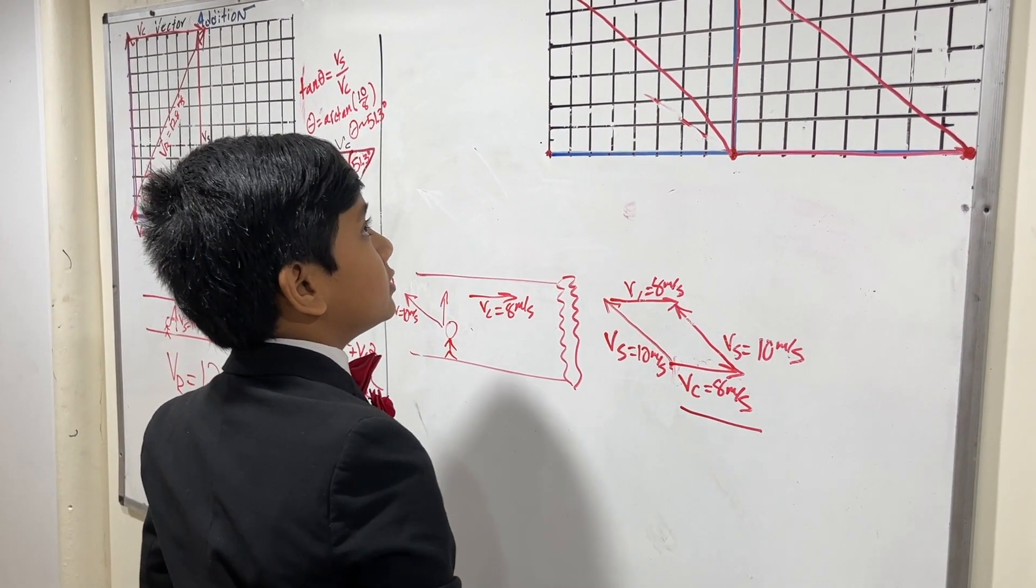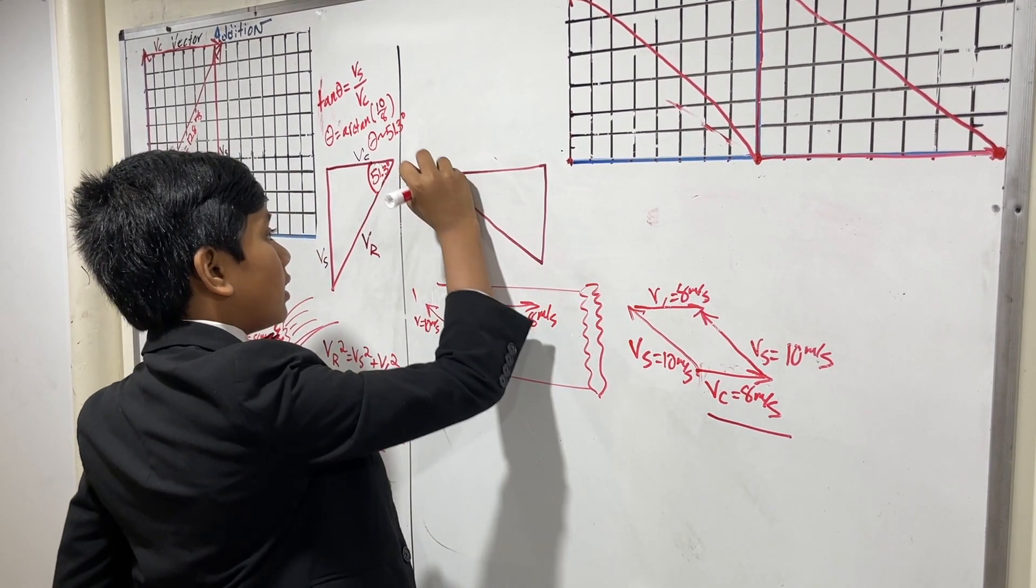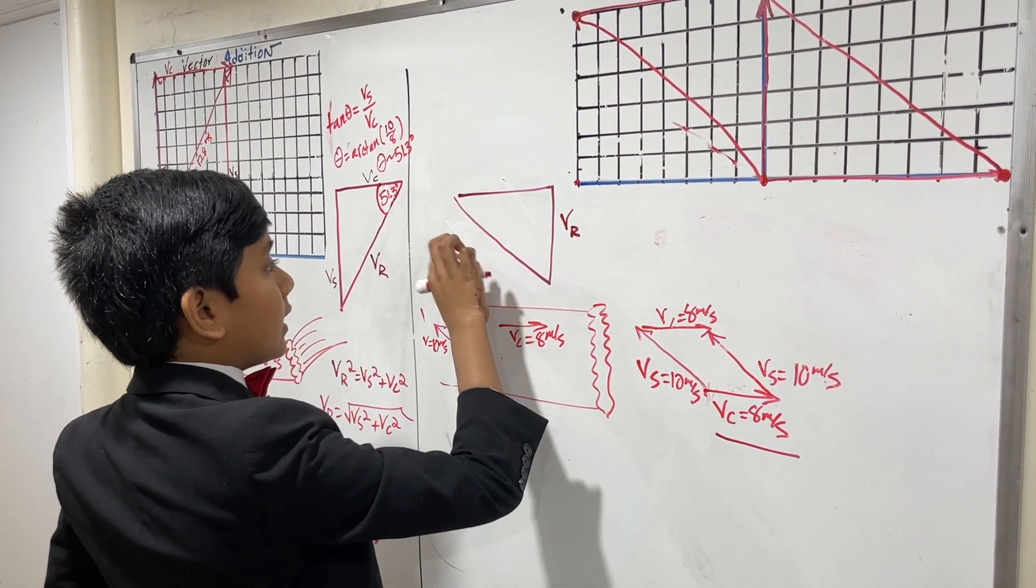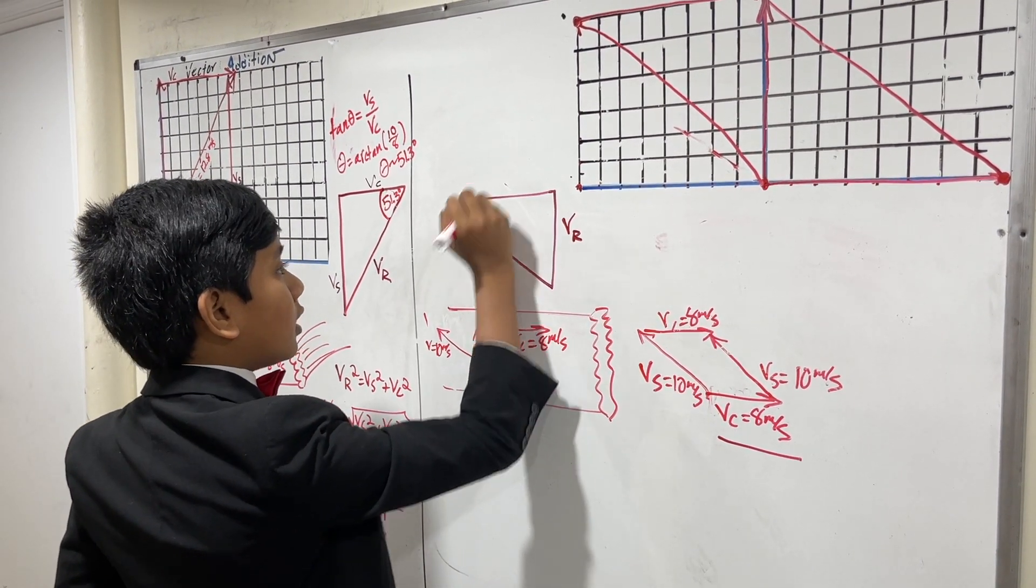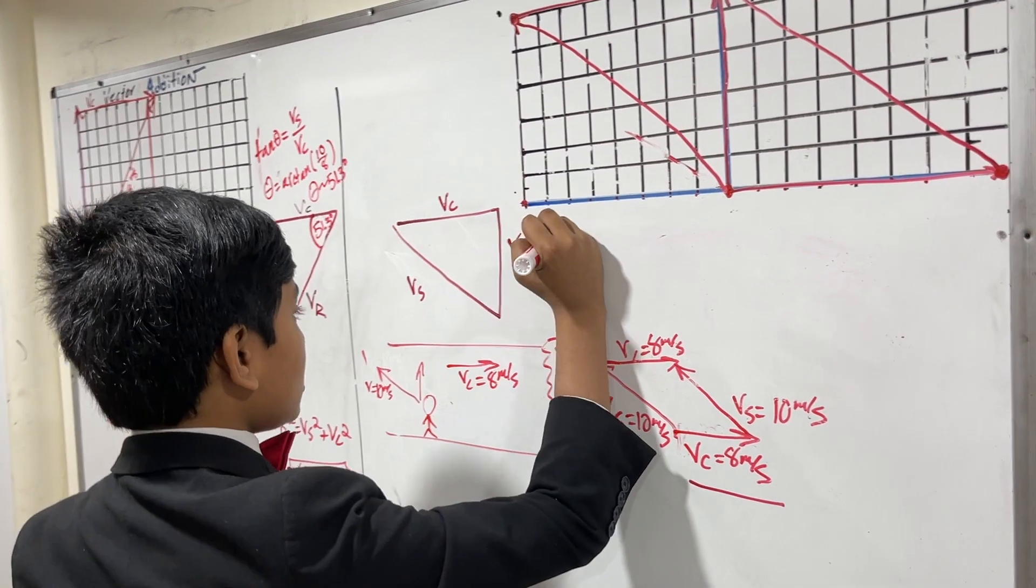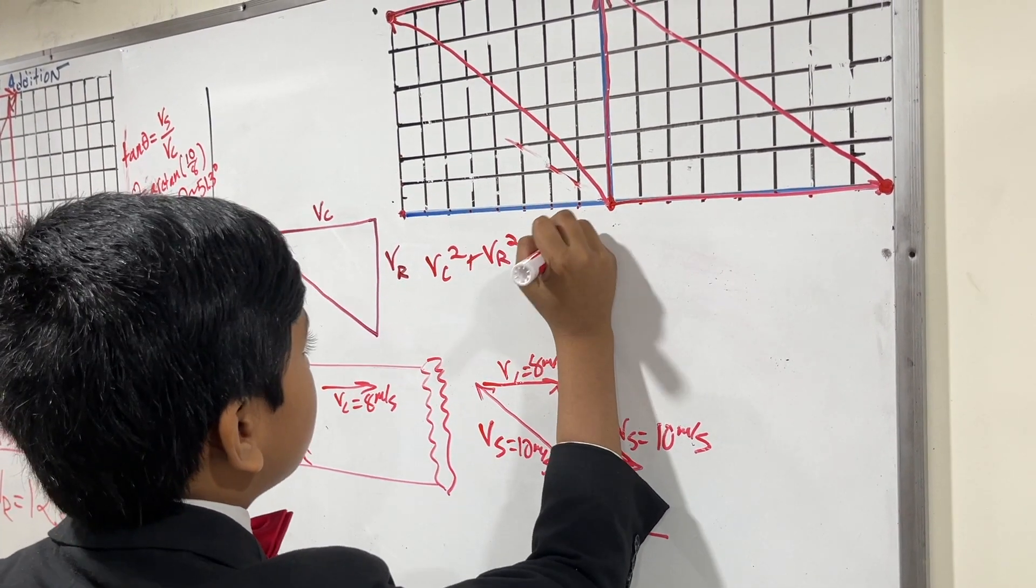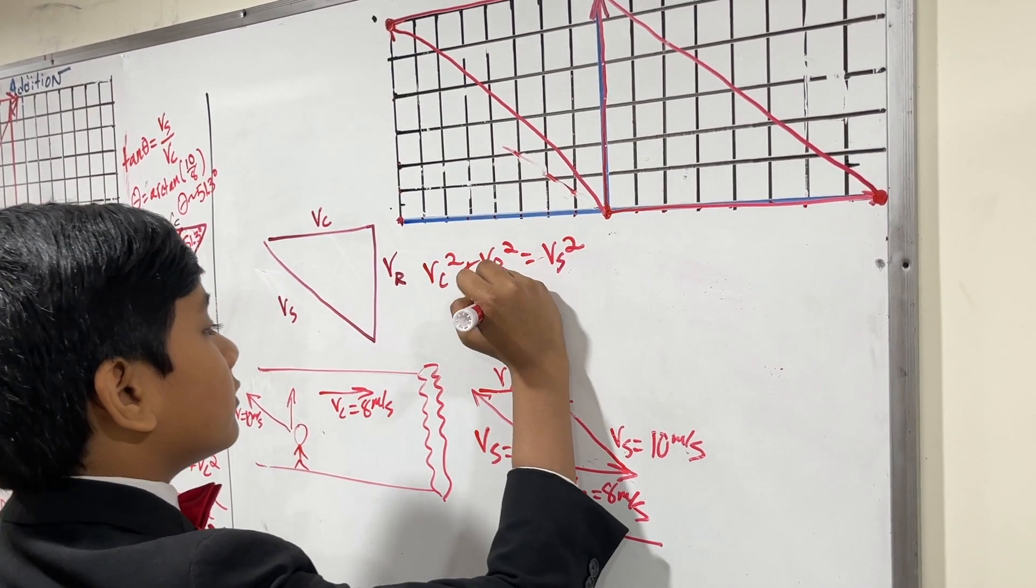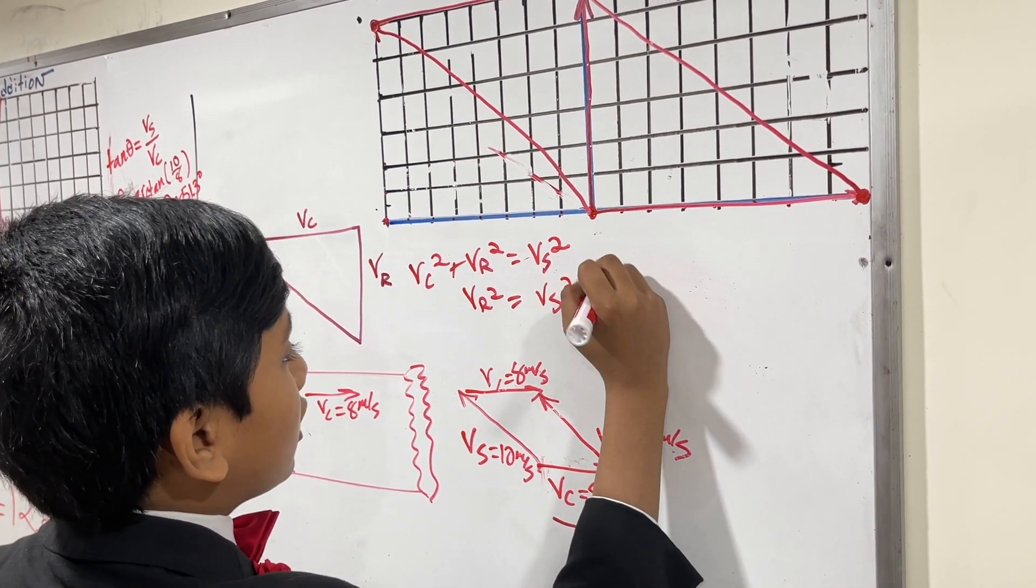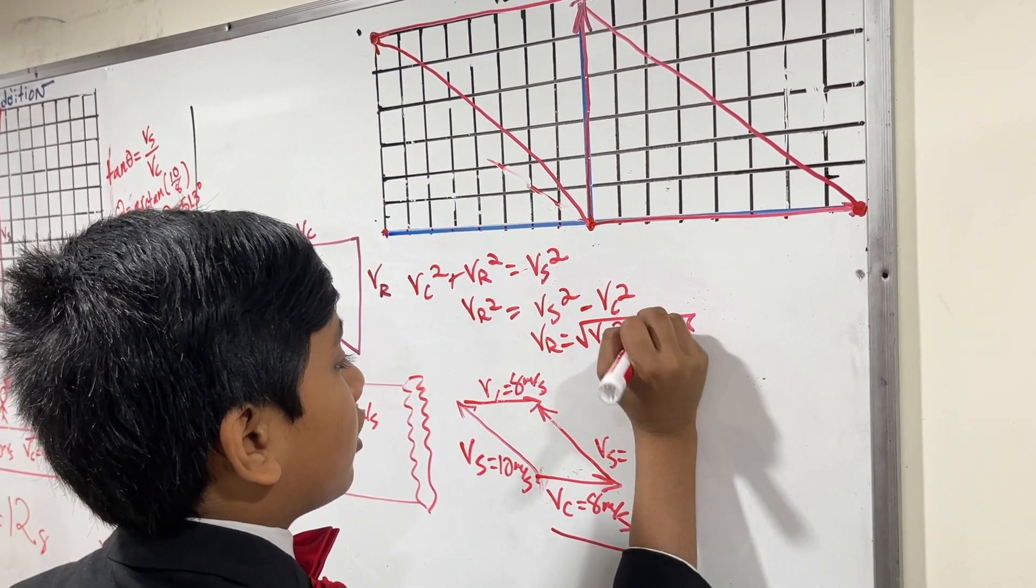And if you wanted to use an equation to do it, you'd use the Pythagorean theorem. Here, we have a velocity. You could call this velocity resultant. And this is velocity Saborno. And this is velocity current. And here, velocity current squared plus velocity resultant squared is equal to velocity Saborno squared. So, velocity resultant squared, velocity Saborno squared minus velocity current squared. And so, what the velocity resultant is the square root of all of that.